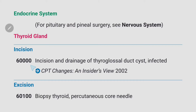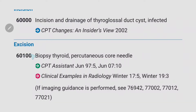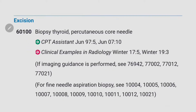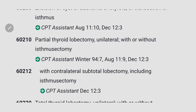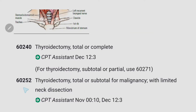For incision, 60000 is for incision and drainage of thyroglossal duct cyst infected. For excision, 60100 is for biopsy thyroid percutaneous core needle - if imaging guidance is performed we need to check those codes. Then for thyroid lobectomy: 60210 is for partial thyroid lobectomy unilateral, 60212 is for partial thyroid lobectomy with contralateral subtotal lobectomy, 60220 is for total thyroid lobectomy unilateral, and 60252 is for thyroidectomy total or subtotal.